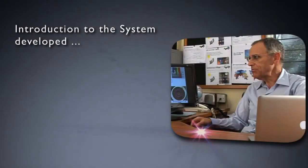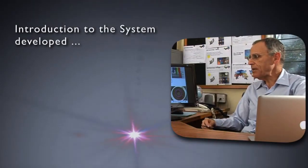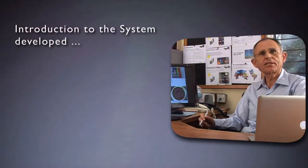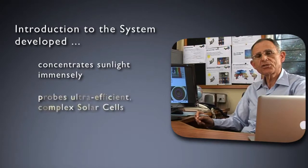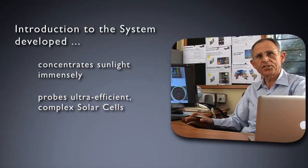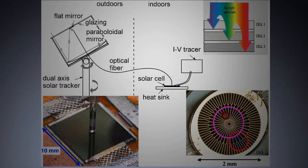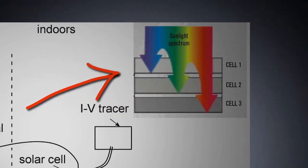One of the systems we've developed is a rather novel optical system for concentrating sunlight to immense levels and then probing the complex solar cells that comprise the latest generation of ultra-efficient converters of sunlight into electricity. This is just a schematic diagram to illustrate how the multijunction or multilayered cells that are now commercial can convert sunlight into electricity in a much more efficient fashion by exploiting more of the solar spectrum than any one layer can.